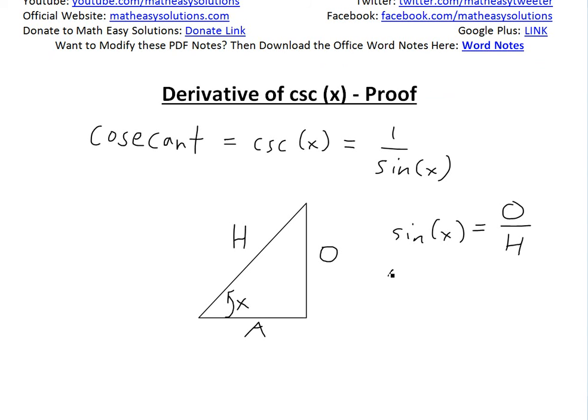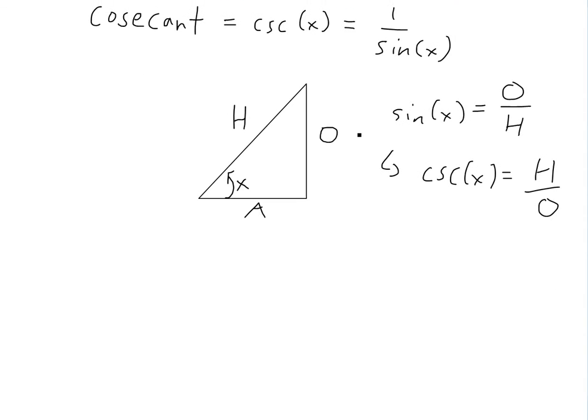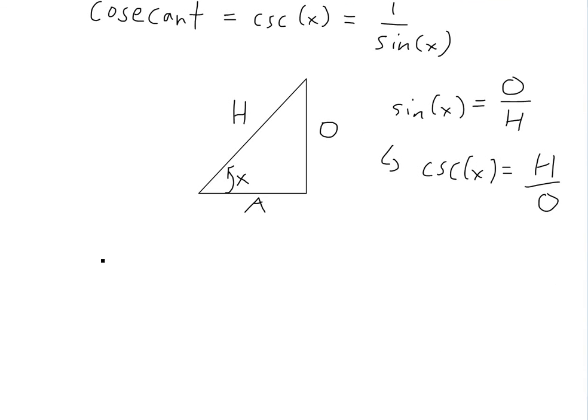The inverse of this would be cosecant of x equals h over o, or hypotenuse over opposite side. So now to get to the proof, let's write it down. If we have y equals cosecant of x, this equals 1 over sine of x.